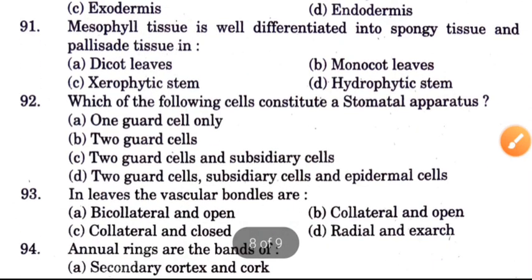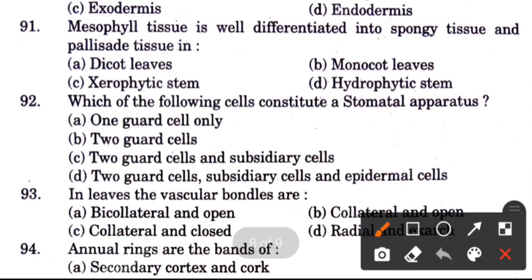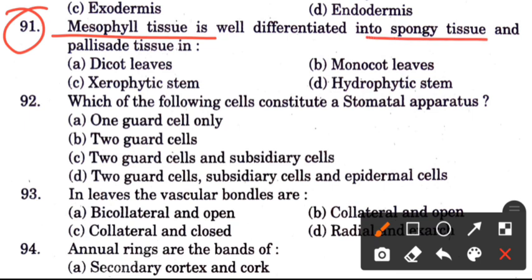Question 91: Mesophyll tissue is well differentiated into spongy tissue and palisade tissue in — options are dicot leaves, xerophytic stem, monocot leaves, and hydrophytic stem. The answer is A, dicot leaves — in dicot leaves, mesophyll tissue is differentiated into spongy and palisade tissue.